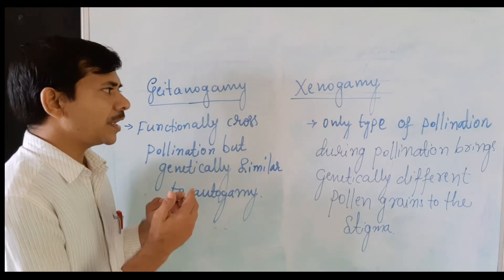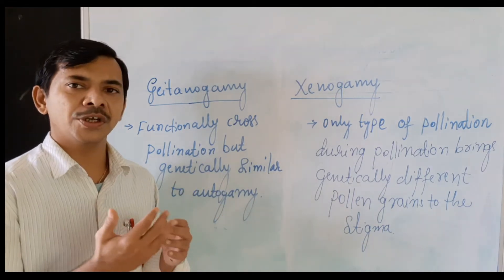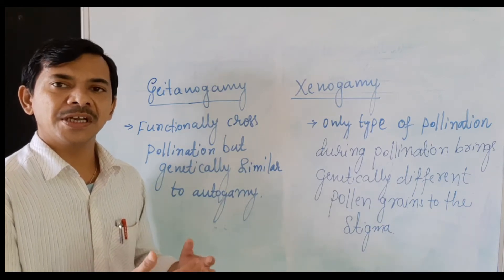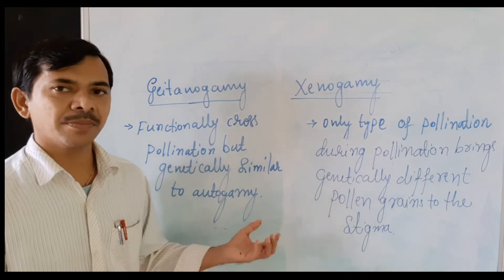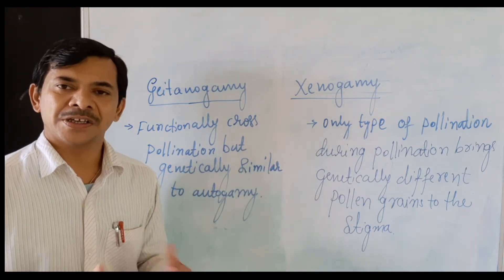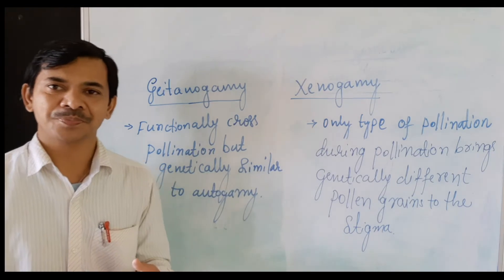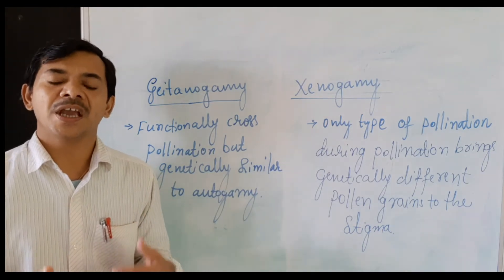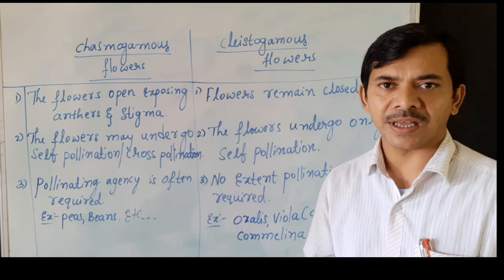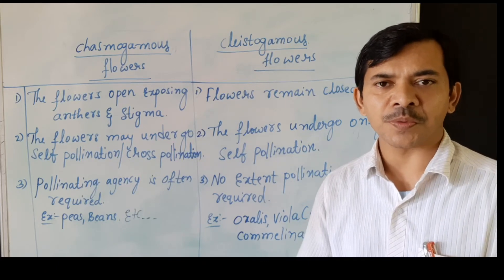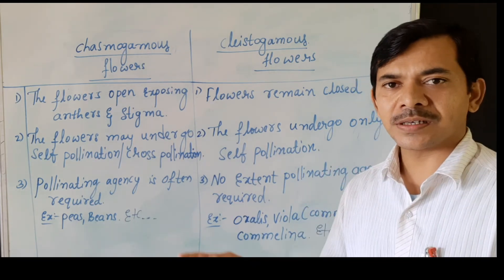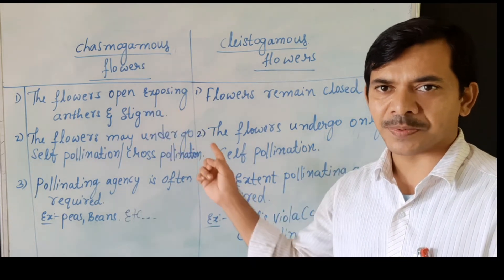Only one type of pollination — xenogamy — brings genetically different pollen grains to the stigma. Xenogamy is responsible for inducing genetically variable plants. Now let us study in detail about chasmogamous flowers and cleistogamous flowers, looking at the board for the differences between them.